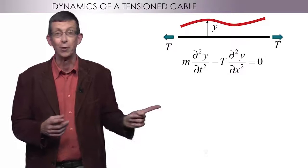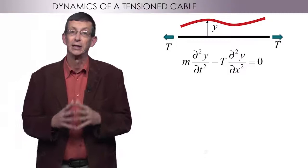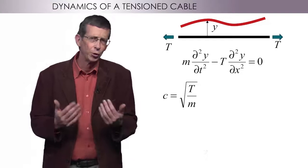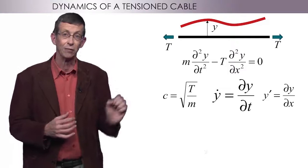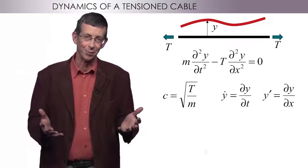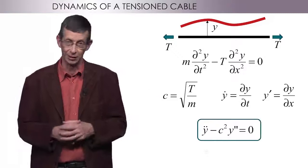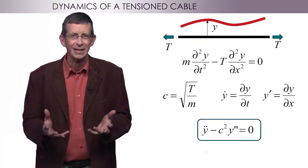To make it even simpler, I can divide by the mass per unit length m and define a quantity c as square root of T over m. We will also use from now on a simple notation for the derivatives. A dot means d over dt and a prime means d over dx. The equation becomes y double dot minus c squared y double prime equals zero. This is often called the wave equation.